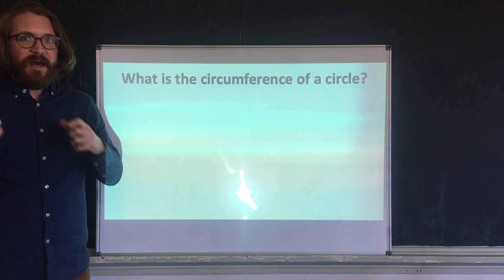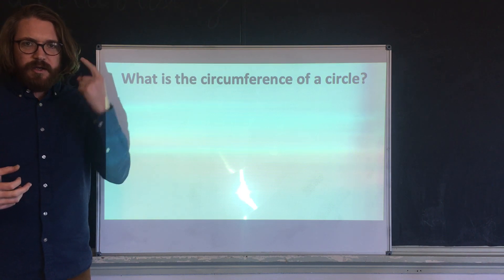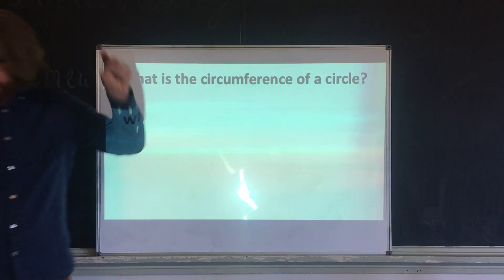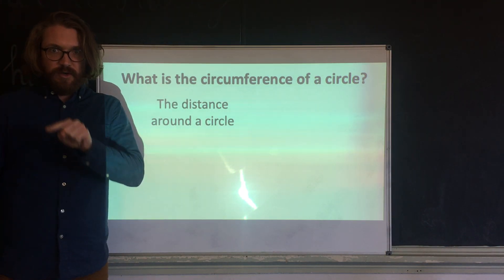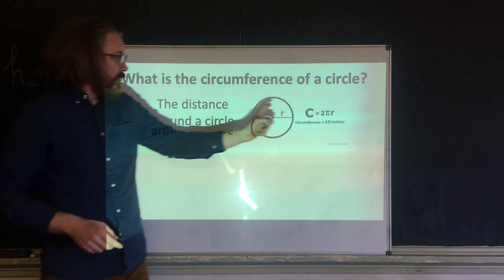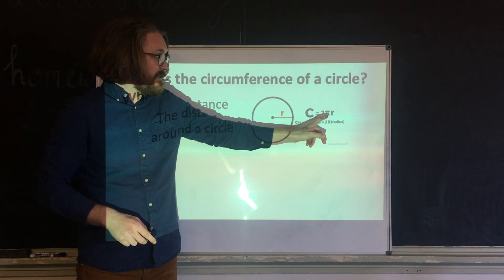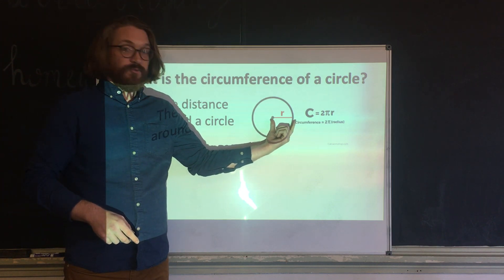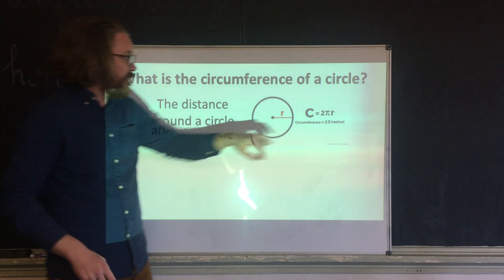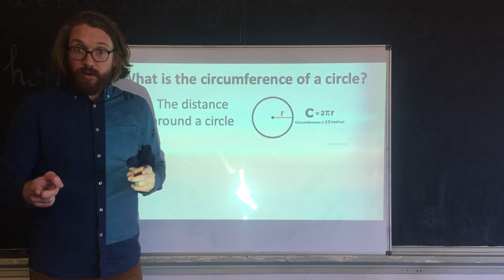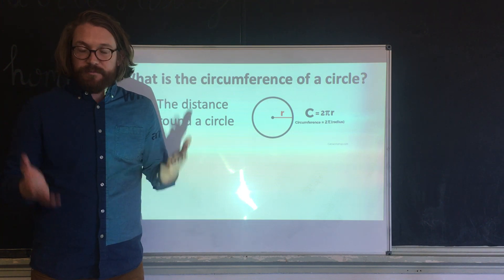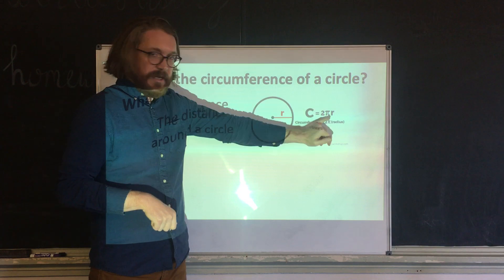We need to remember a few things about circles. The circumference is the distance around the outside of a circle, and we calculate it with: circumference equals two times pi times r, where r is the radius. Pi is approximately 3.14 — a constant with a button on your calculator.